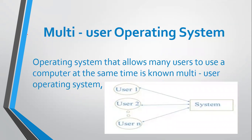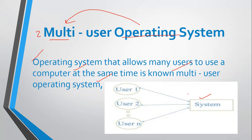On the other hand, the second type in the classification of operating systems is the multi-user operating system. As the name suggests, multi means more than one — an operating system which supports more than one user at a time is called the multi-user operating system. An OS that allows many users to use a computer at the same time is known as a multi-user operating system.